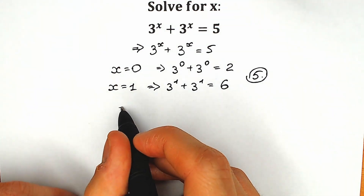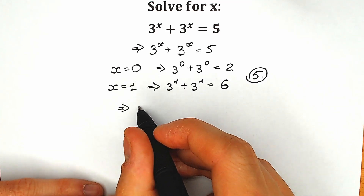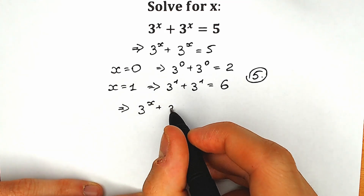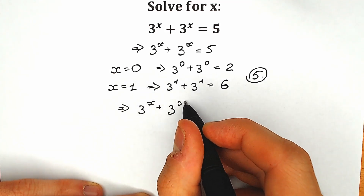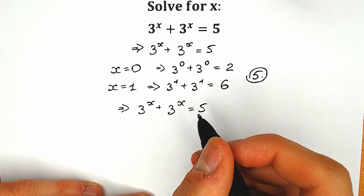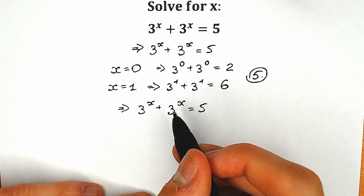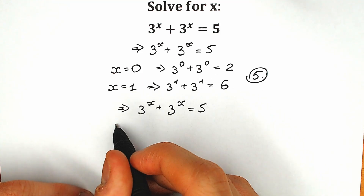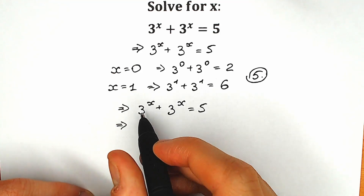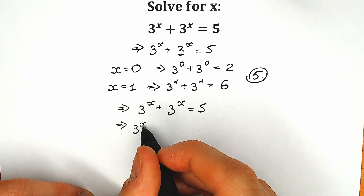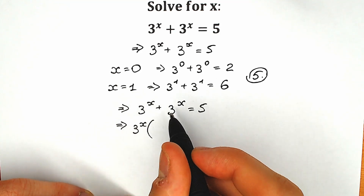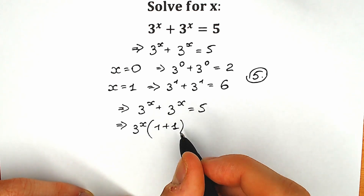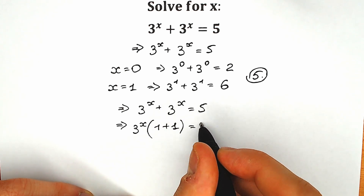First of all, let's add 3 to the x plus 3 to the x. How can we add it? A lot of students are confused about how to add this expression. Let's factor it. We have 3 to the x, and inside parentheses we have 1 and 1 from each term. So we have 3 to the x times (1 plus 1) equal to 5.